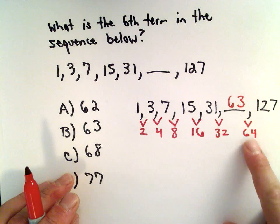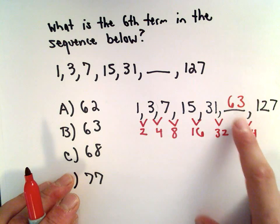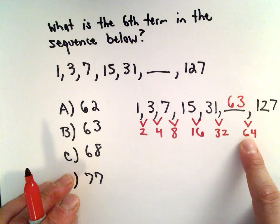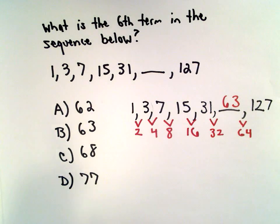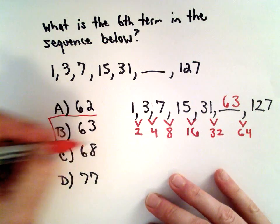And let's check. Because then if I add 64, 63 plus 64 is, in fact, 127. So it looks like this would be the correct choice.